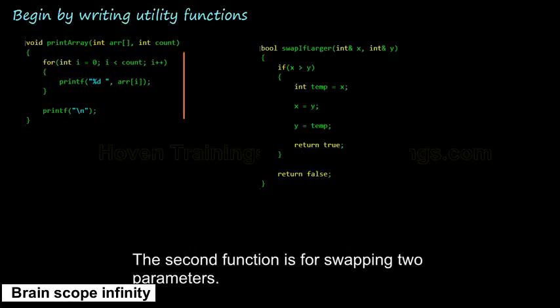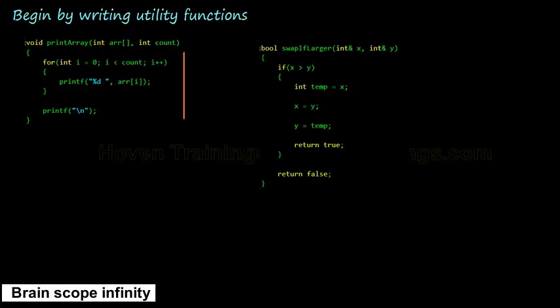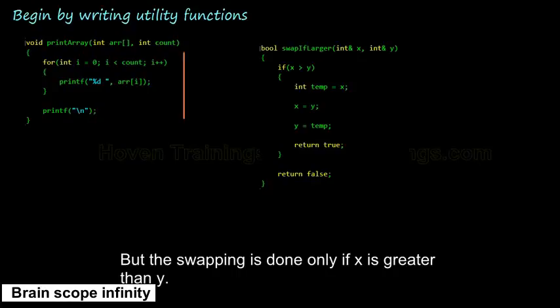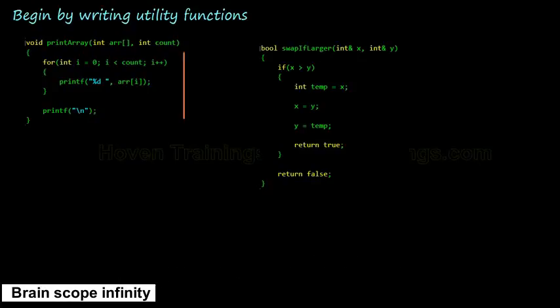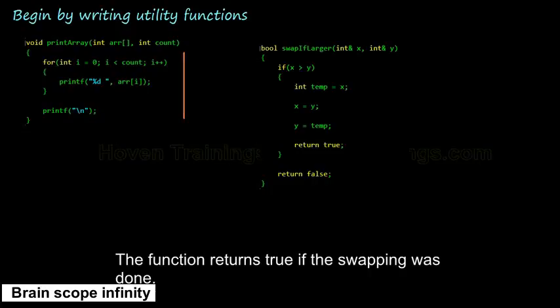The second function is for swapping two parameters, but the swapping is done only if x is greater than y. The function returns true if the swapping was done and it returns false if swapping was not done.